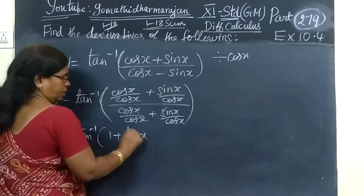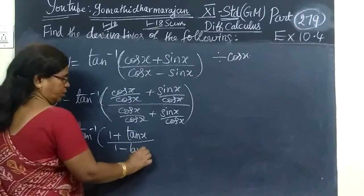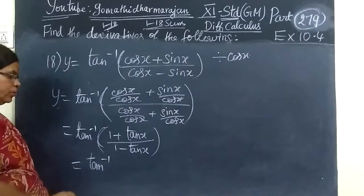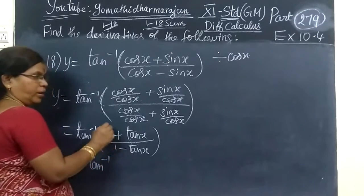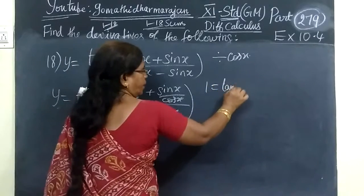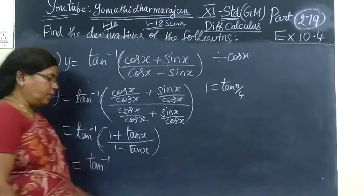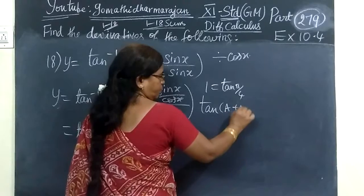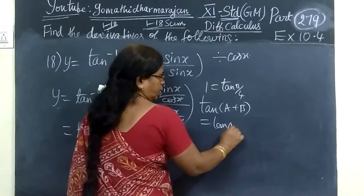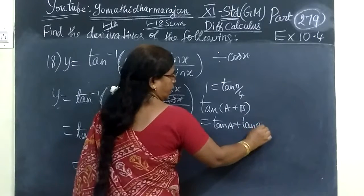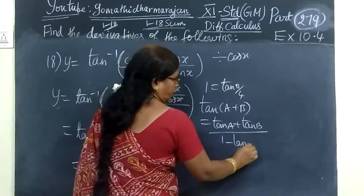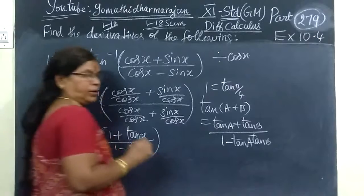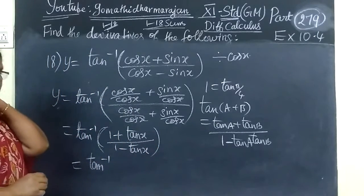First theorem, tan x. Then 1 minus tan x. You know, generally number 1, tan inverse. In the 1, you can type this as tan π by 4. Here, the formula for you. You know, tan inverse A plus B equal to tan A plus tan B by 1 minus tan A tan B. This formula for you.